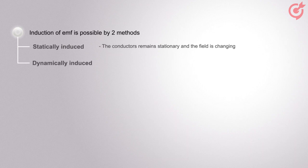Induction of EMF is possible by two methods: statically induced or dynamically induced. In statically induced EMF, the conductors remain stationary and the field is changing. In the case of dynamically induced EMF, the field is stationary and the conductors cut across it.